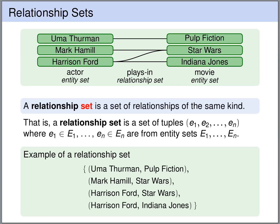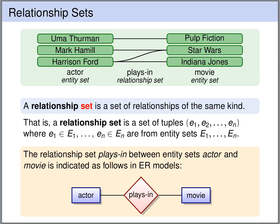A relationship set is a set of relationships of the same kind. Formally, a relationship set is a set of tuples (E1 up to EN) such that E1 is from the first participating entity set, E2 is from the second, and so on. The example above is formally a set of pairs: Uma Thurman/Pulp Fiction, Mark Hamill/Star Wars, Harrison Ford/Star Wars, and Harrison Ford/Indiana Jones. In the ER diagram, the relationship set PlaceIn between the entity sets Actor and Movie is indicated using a diamond, connected by lines to both the Actor and Movie entity sets.